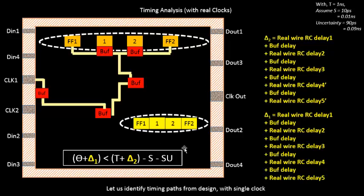The defining equation for setup becomes: combinational delay plus launch clock network delay should be less than the clock period plus the capture clock network delay minus the setup time minus the setup uncertainty. Everything remains the same as in the timing analysis done for the placement stage, except two new terms are added: delta 1 and delta 2, the launch and capture clock network delays. These defining equations and their derivation are covered in detail in the clock tree synthesis videos.